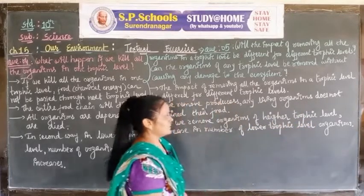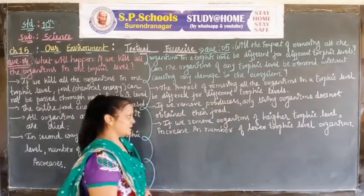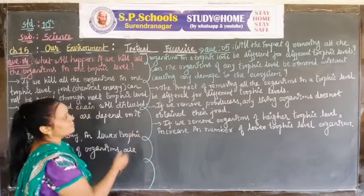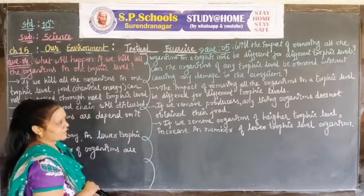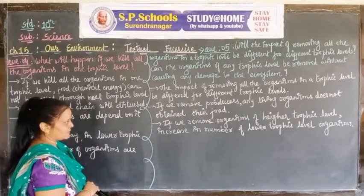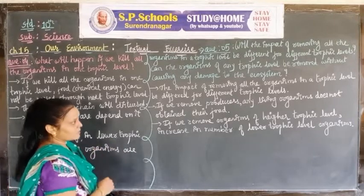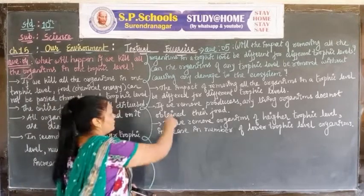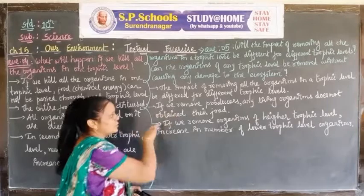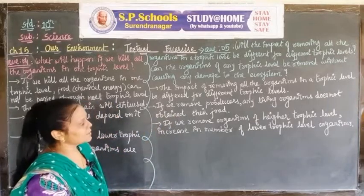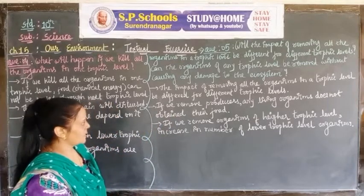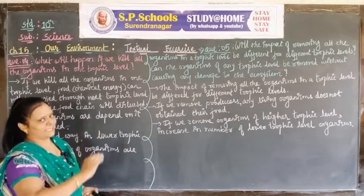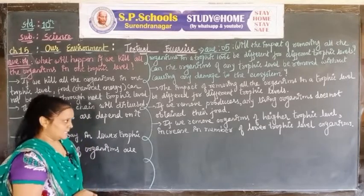As per our answer to question four: if we remove organisms of a higher trophic level, the number of organisms at the lower trophic level increases. If we remove producers, no living organism can obtain their food and the whole food chain is disturbed.